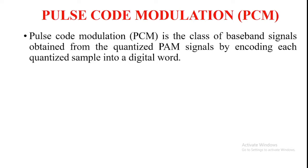Before going to the definition of pulse code modulation, let's first cover what modulation is. Modulation is the process of varying one or more parameters of a carrier signal in accordance with the instantaneous value of the message signal. That is the definition of modulation.